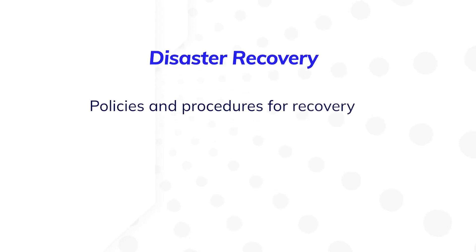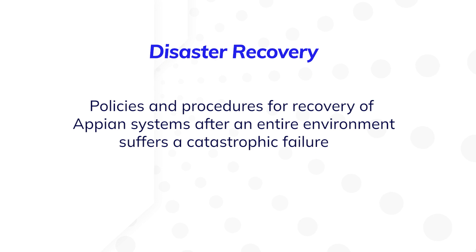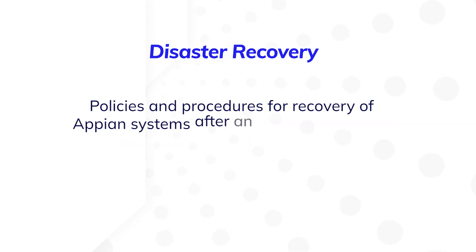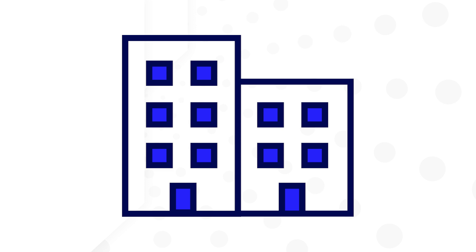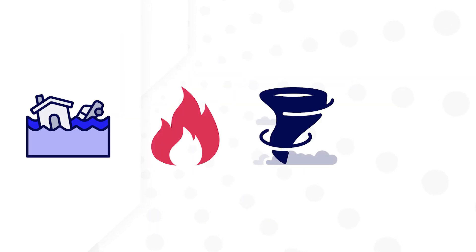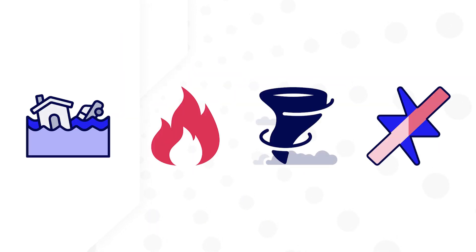Disaster recovery refers to the policies and procedures related to preparing for recovery or continuation of Appian systems after an entire environment suffers a catastrophic failure, referred to as a major incident. A site may be brought offline by flooding, fire, other natural disasters, or power outages where no backup power is available.